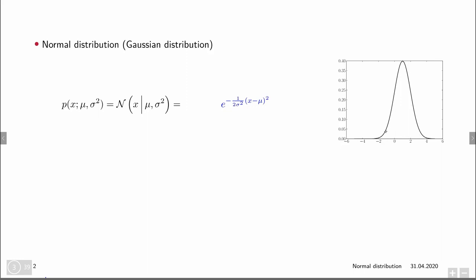The normal distribution you have for sure seen many times before is this famous bell curve. It is a probability density function described over some values x, and it is parameterized by two parameters. We use the semicolon here to separate the values at which we evaluate this probability density from the parameters. We typically write the normal distribution, also called the Gaussian distribution, by a cursive capital N of x, and the parameters are called the mean and the variance, mu and sigma squared.